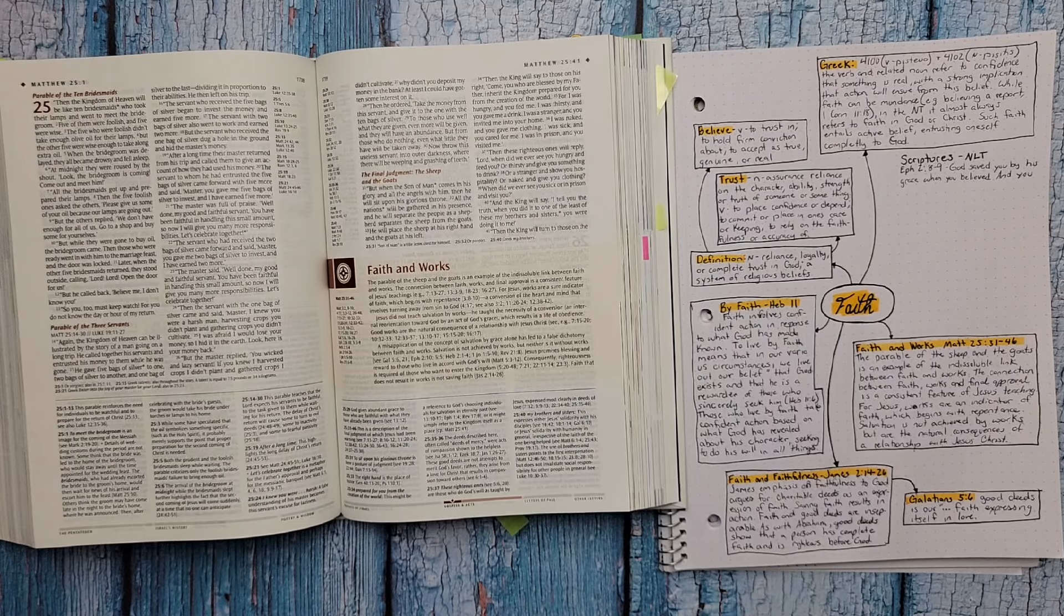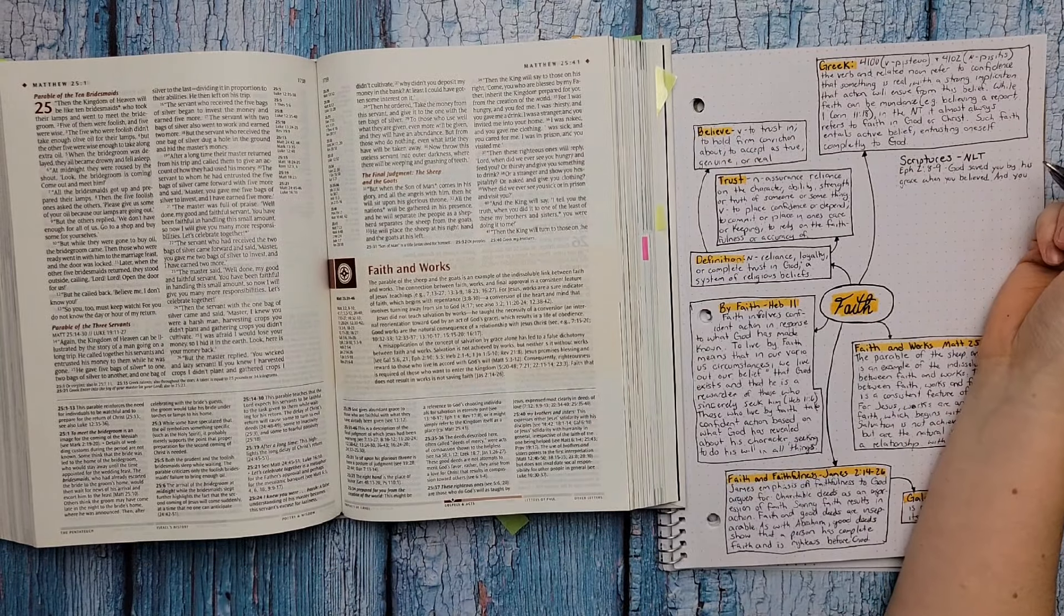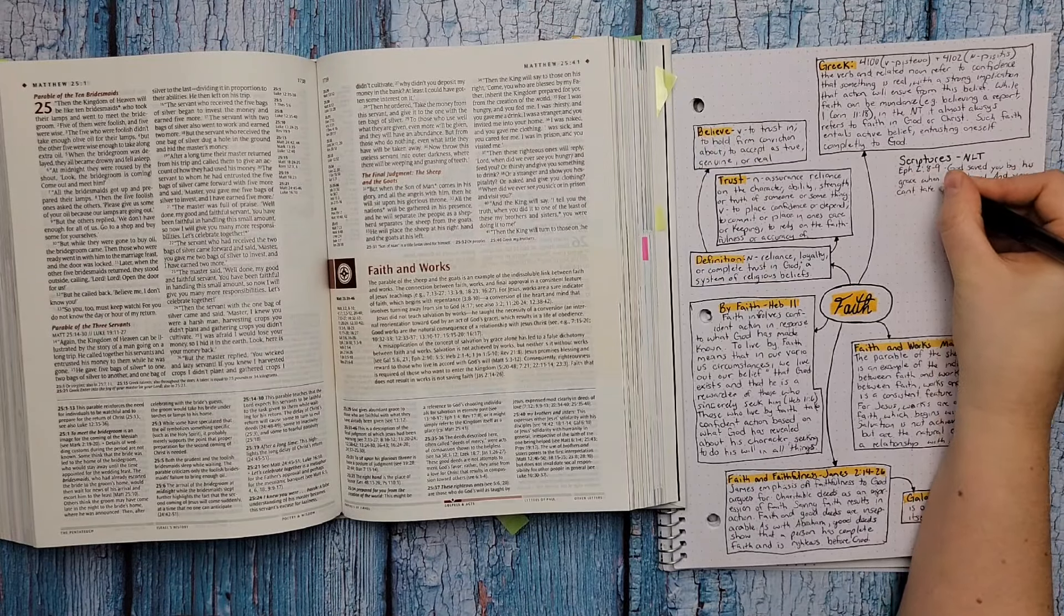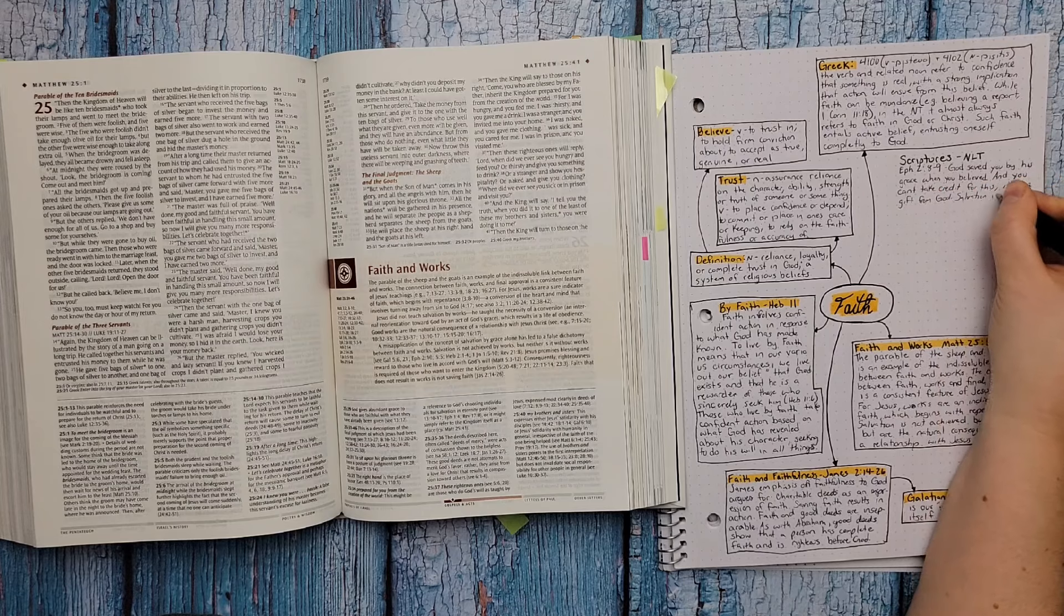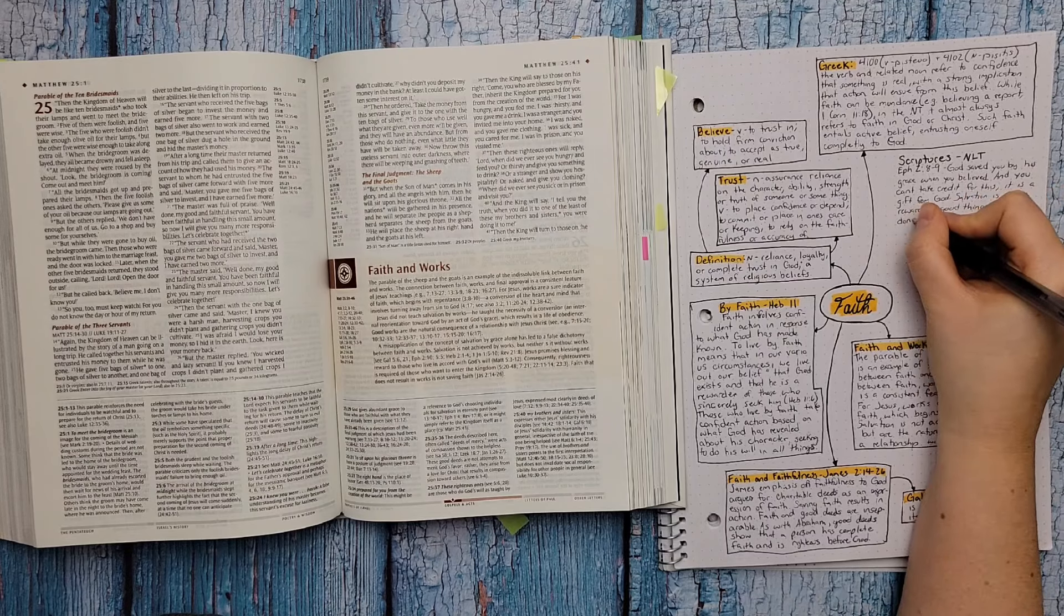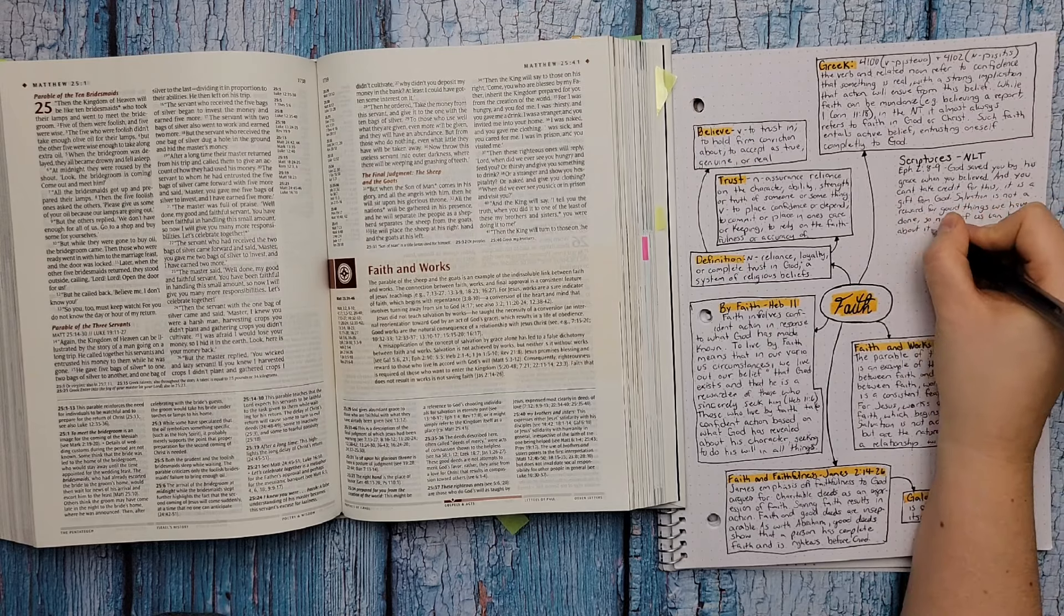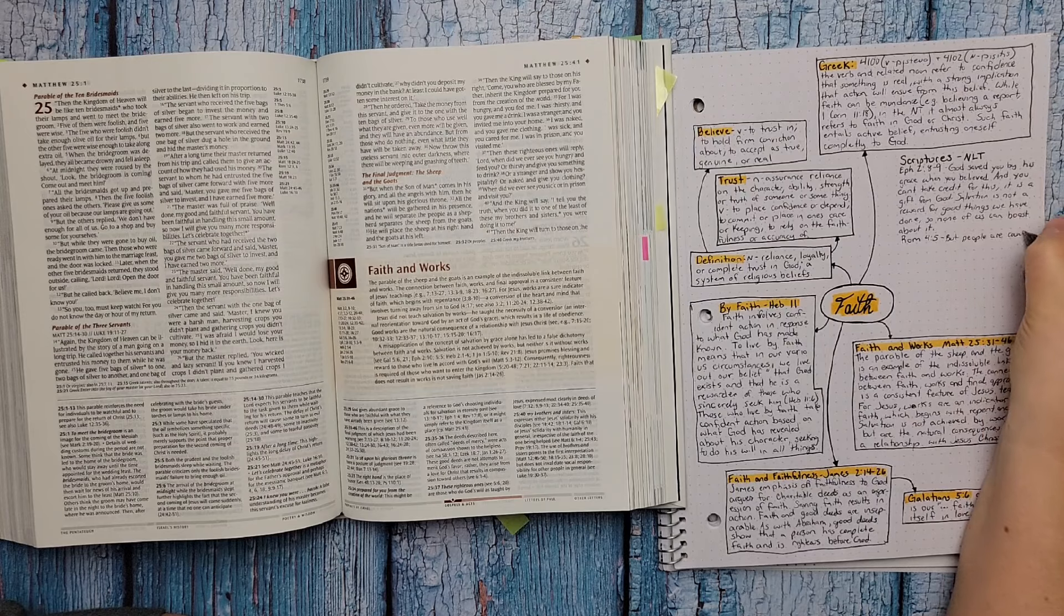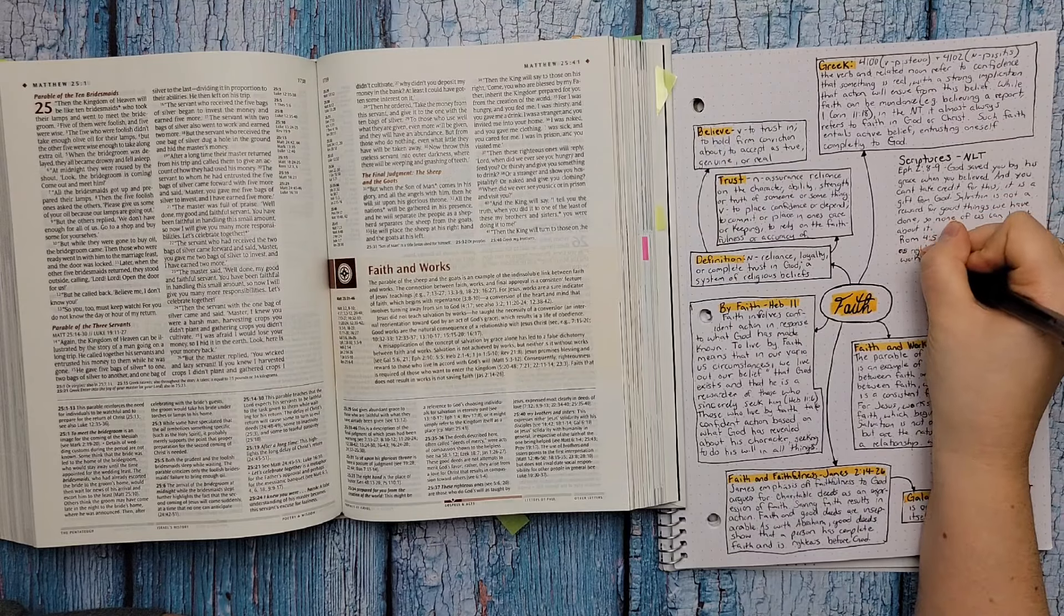Romans 4:5 says, but people are counted as righteous, not because of their work, but because of their faith in God who forgives sinners. So when you put your faith in God and when you repent, that faith is counted as righteousness. And that is how you are declared righteous before God, because you put your faith in Jesus. And then in 1 John 3:7, it says, Dear children, don't let anyone deceive you. When people do what is right, it shows that they are righteous, even as Christ is righteous. So your faith is counted as righteousness and you can be declared righteous by the blood of Jesus. And then your actions show that you have put your faith in Jesus because you are going to follow him and do what is right.